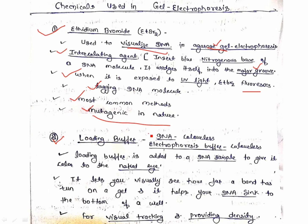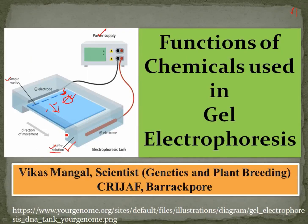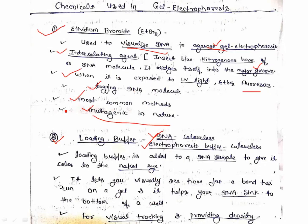Loading buffer or loading dye — whatever you call it — is added to the DNA sample to give it color visible to the naked eye. DNA is colorless and the buffer solution is also colorless, so you cannot see what has moved. Loading dye provides color to track migration. It lets you visually see how far a DNA band has run on the gel. It also helps your DNA sink to the bottom of the well when loading, and provides density. The dye movement tells you that the process is running properly.